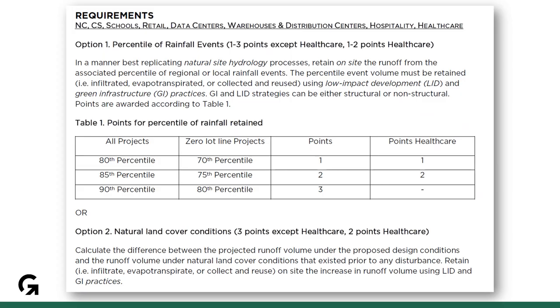The focus will be on the popular Option 1, percentile of rainfall events, but most of these steps apply to Option 2 as well. These apply equally to LEED v4 and v4.1.